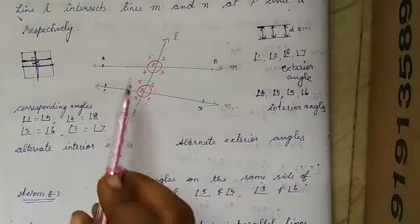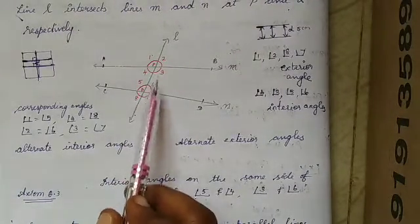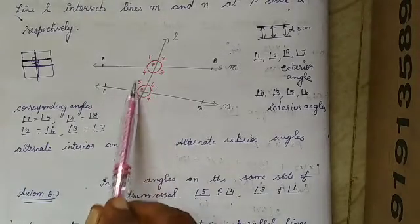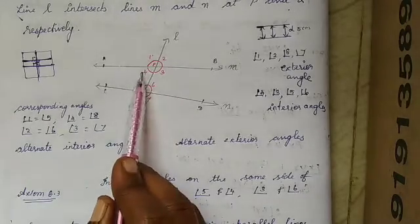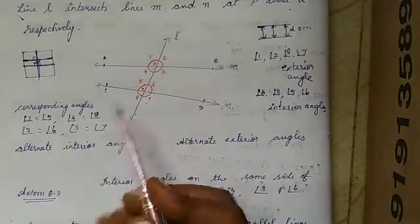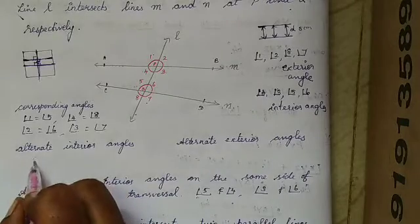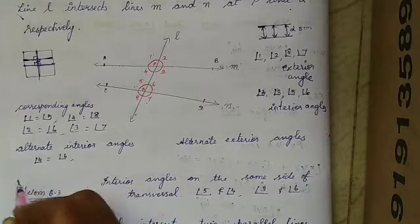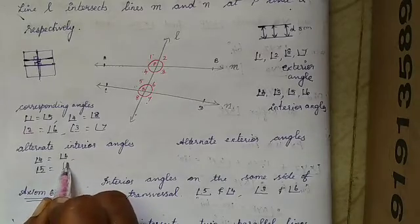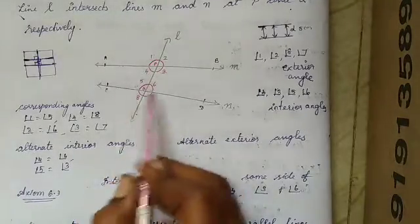Now, alternate interior angles. Alternate means we take angles on the opposite side. The four interior angles are 4, 3, 5, and 6. Opposite pairs are: 4 and 6 are opposite, and 5 and 3 are opposite. So angle 4 is equal to angle 6, and angle 5 is equal to angle 3. These are the alternate interior angles.